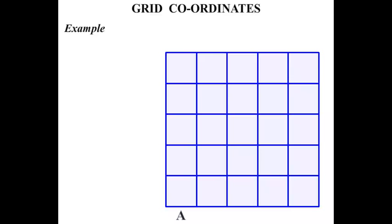So from the bottom A, B, C, D and E. And on the side from the bottom 1, 2, 3, 4, 5.